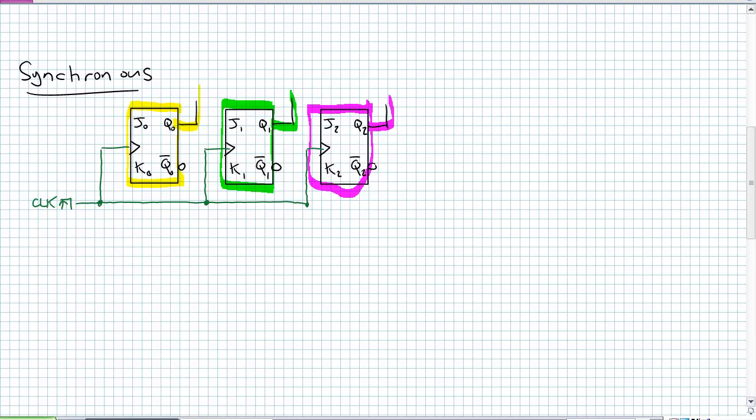I have not put the J and K input logic yet. The reason why is we'll go into that in specifics. But right now, suffice to say, the J and K inputs for each stage are given logic to make this thing count. And when I say make it count, you may want it to count in an up sequence or a down sequence, or an odd sequence, or an even sequence.